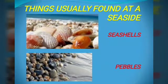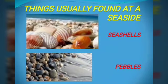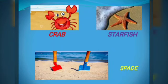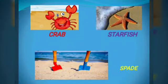Let's find out the things usually found at the seaside. We find various seashells there — they are of different colors and different shapes. Pebbles — lovely pebbles we find at a seaside. A crab is an animal which is mostly found at the seaside. A starfish, and we can also use a spade there for digging the sand.